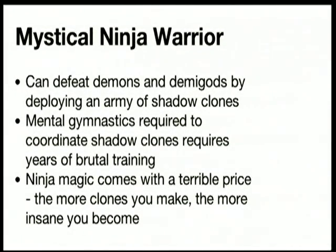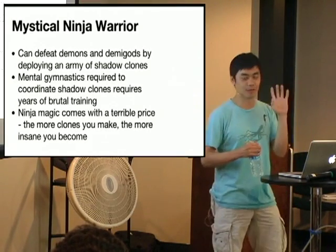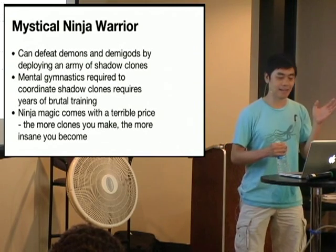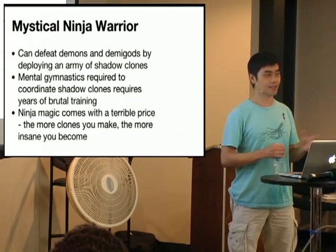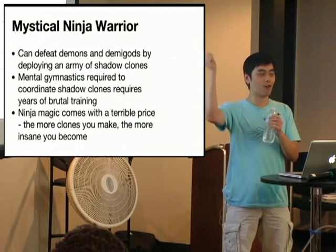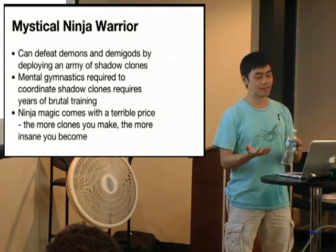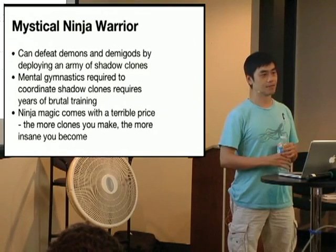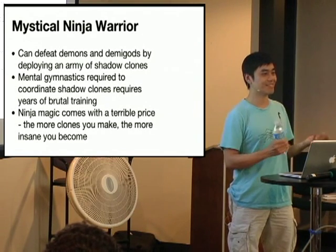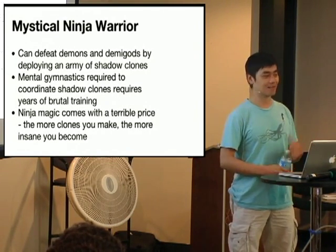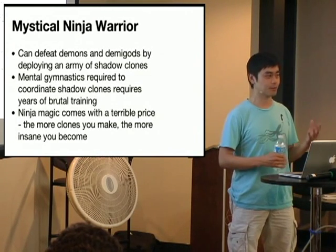Because you're not taking on random dudes—you're fighting demons and demigods. And the only way you can do that is if you clone yourself: you have to make an army of shadow clones. Concurrency. This is not easy—there's a huge amount of mental gymnastics required, and you have to train for years and years, and you might die. Also, ninja magic always comes with a terrible price. The more clones you make, the more insane you become. Twisted people should be nodding—this is exactly how Twisted works. It's kind of cool, but it's also insane.